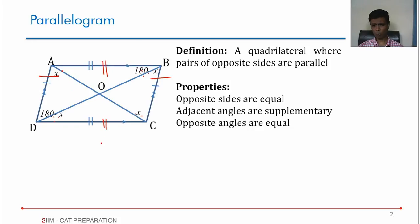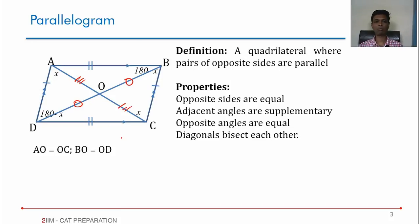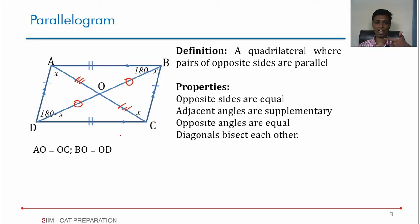On top of all this, one other property: diagonals bisect each other. So AO is equal to OC, BO is equal to OD. The diagonals of a parallelogram bisect each other. So parallelogram properties: opposite sides are parallel and equal, opposite angles are equal, all pairs of adjacent angles are supplementary, diagonals bisect each other.